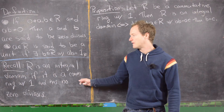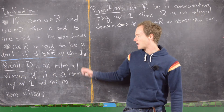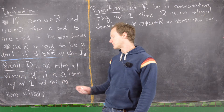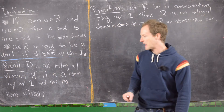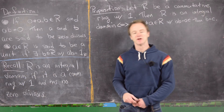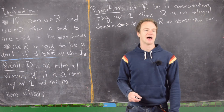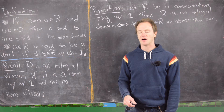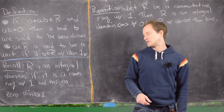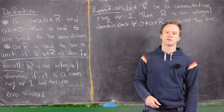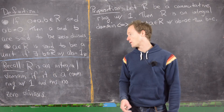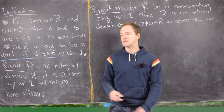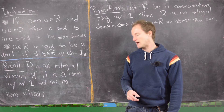R is an integral domain if it is a commutative ring with 1 and has no zero divisors. In a previous video, we looked at Z_n and saw that if n was composite, then it does have zero divisors — we didn't call them that at the time, but that's what we proved.